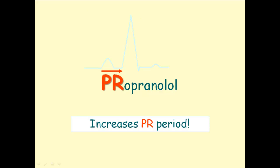The PR period in this diagram is represented by the red arrow. This visual mnemonic is shown to help you remember that all beta-blockers increase the PR period.